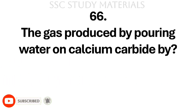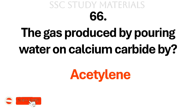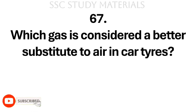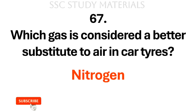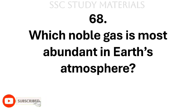Question No. 66: The gas produced by pouring water on calcium carbide is? Answer: Acetylene. Question No. 67: Which gas is considered a better substitute to air in car tires? Answer: Nitrogen. Question No. 68: Which noble gas is most abundant in earth's atmosphere? Answer: Argon.